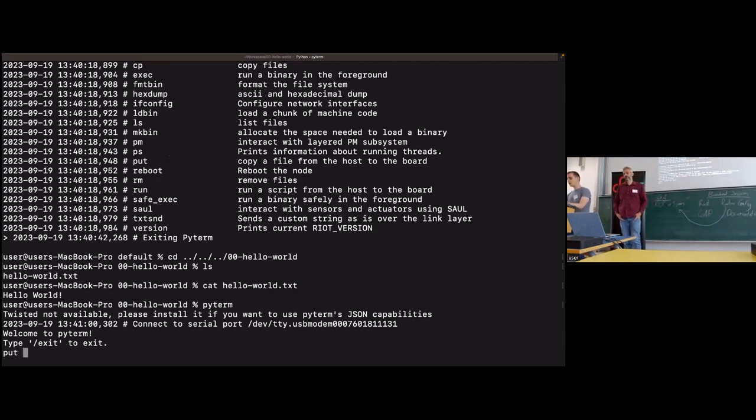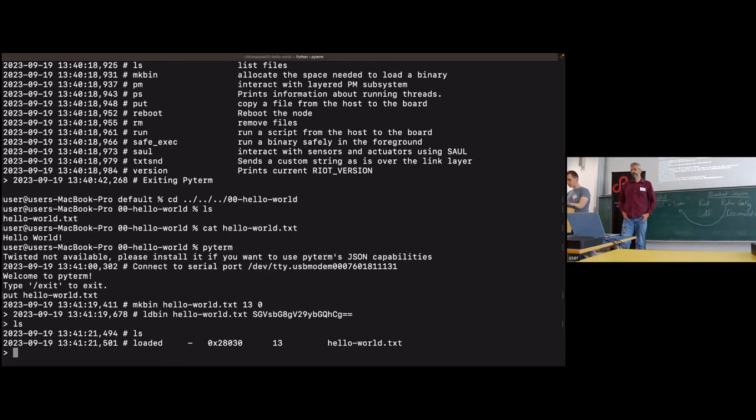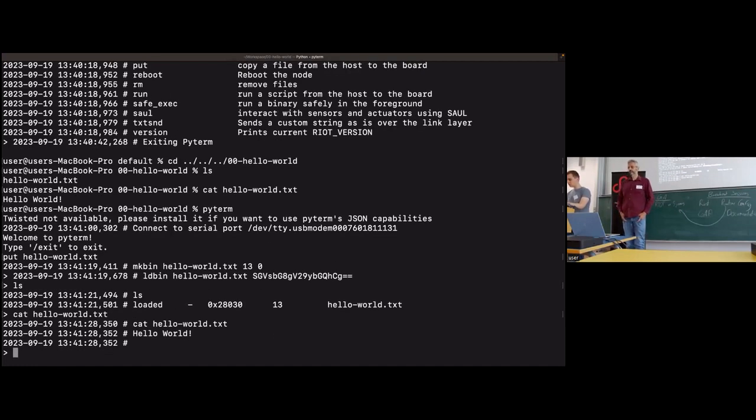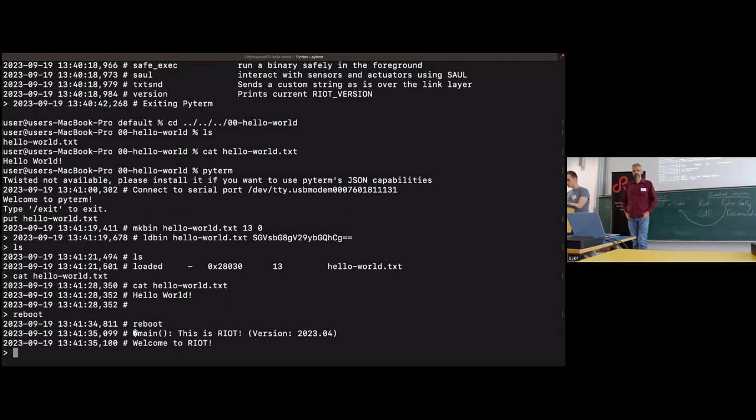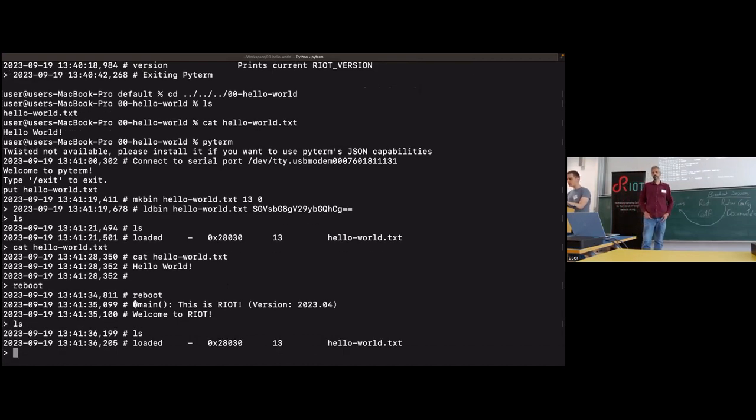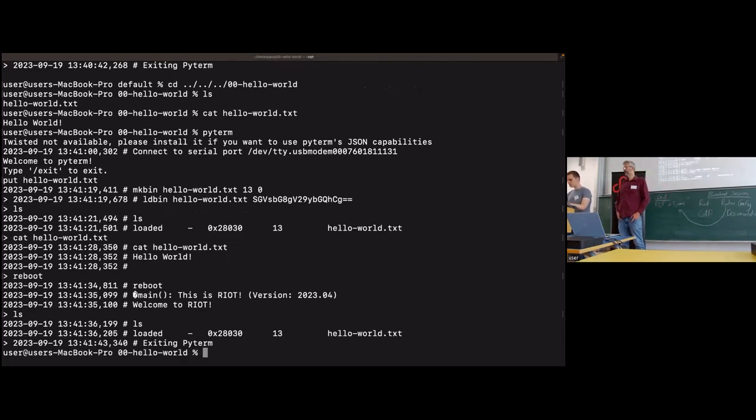So the put command will transfer the file from the host to the board. So if I type put hello world.txt. Okay, the file is loaded. So I can cat the file on the board. Okay, we have the hello world string. I can reboot the board. So if I type this again, the data is well persistent. So now that we are able to load files, we can load binaries. So let's move on to the next demonstration.